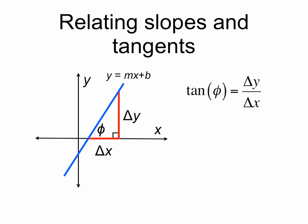Now we can relate the slope of the line to the tangent of phi. The tangent of phi is the opposite over the adjacent inside that right triangle. The opposite is delta y and the adjacent is delta x. So the tangent of phi is delta y over delta x.